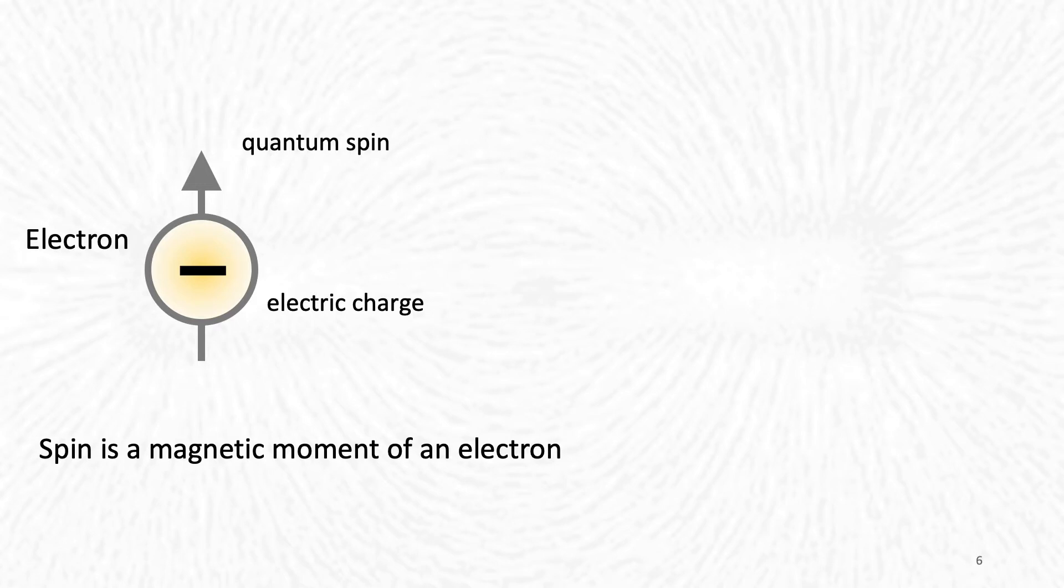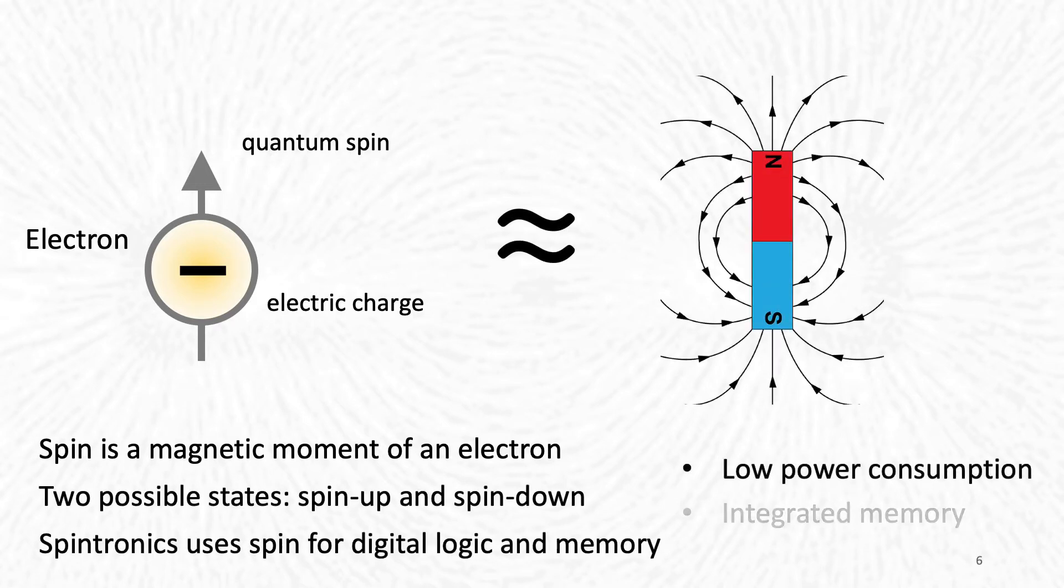So normal electronics uses the electric charge of electrons for computing. But electrons also have a quantum property of spin, which describes their magnetic properties. Simply put, one can imagine electrons as tiny magnets. All electrons can have only two values of spin, we call them spin up and spin down, which can be used as a new way to represent zeros and ones. This way, spintronics aims to use the electron spins for information technology.